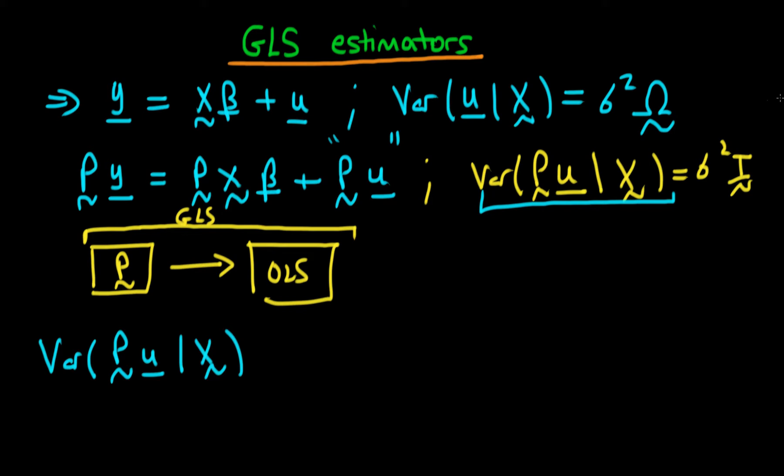We can expand it using the form which we have for the variance of a constant matrix A times a random vector X. We know that this is just equal to the matrix A times the variance of the random vector X times A transposed.